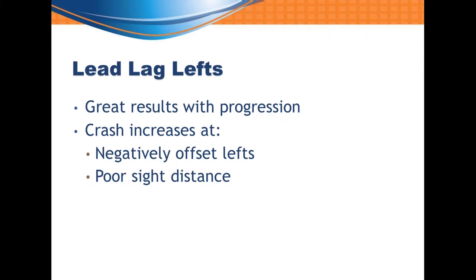Regarding the lead-lag lefts, we tried them on Knoxville Avenue and took that corridor out of the main study since it was something different. We got a SCAT — signal coordination and timing — project and allowed the consultant to put in lead-lag phasing. The results for progression were amazing: we got great improvement, eliminated a couple of stops, and increased average speed through the corridor by about five miles per hour. But then we noticed at a couple of intersections, crashes were increasing — not all of them, some stayed the same or went down, but two in particular saw crashes go up.